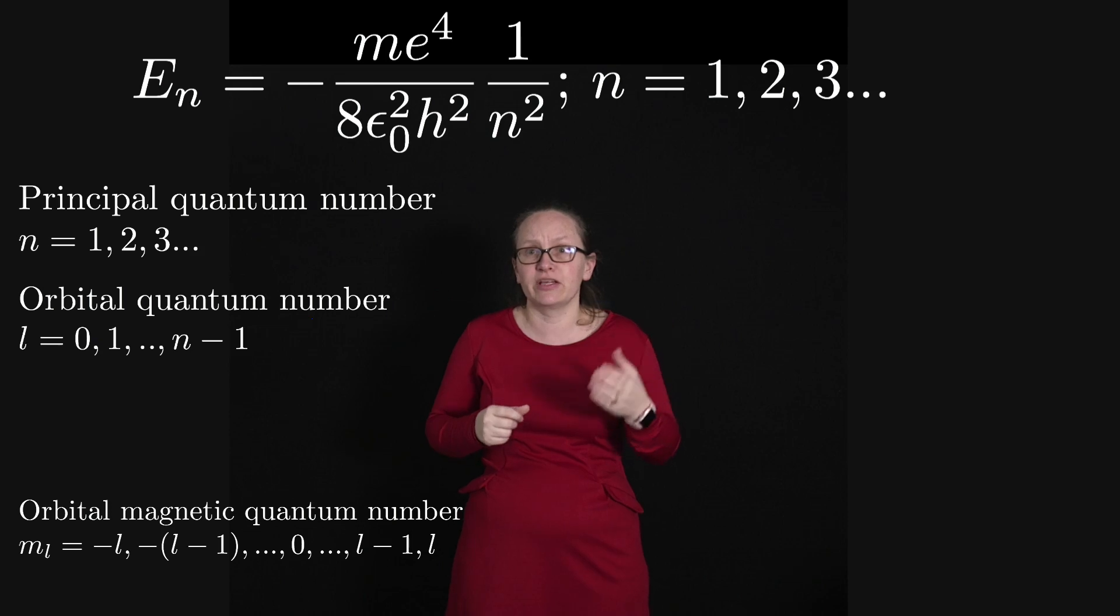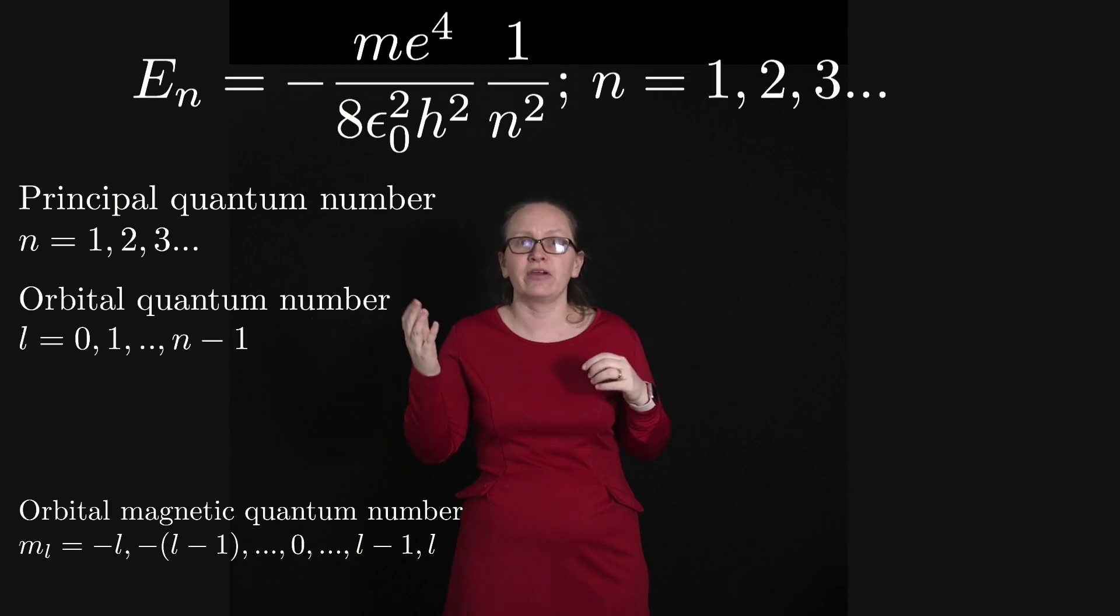With Schrödinger's equation, the ground state electron with n equals one has L equal to zero, and so the angular momentum in this case is equal to zero. So according to Schrödinger's equation, our ground state electron doesn't have any angular momentum, which is in fact what people have found to be true.